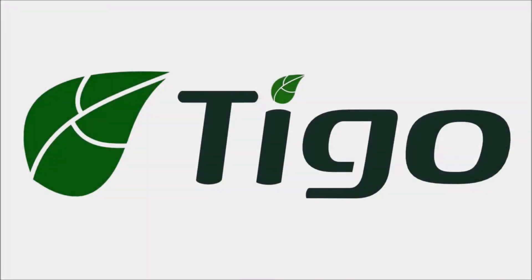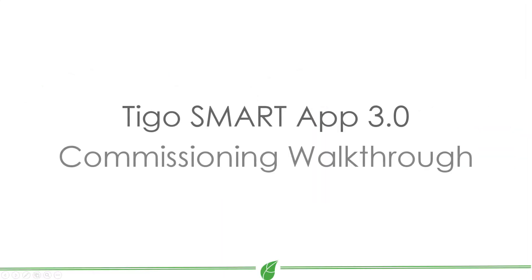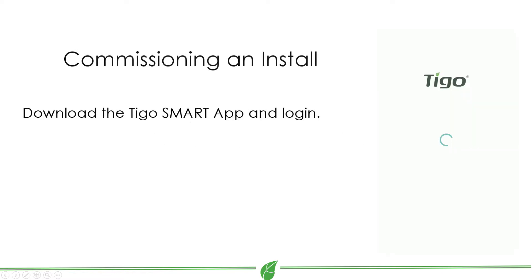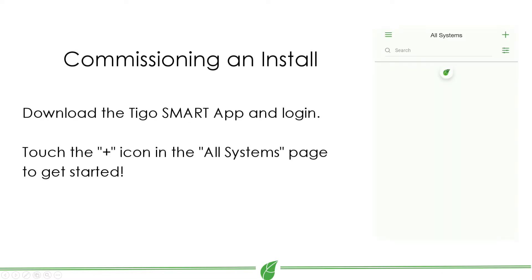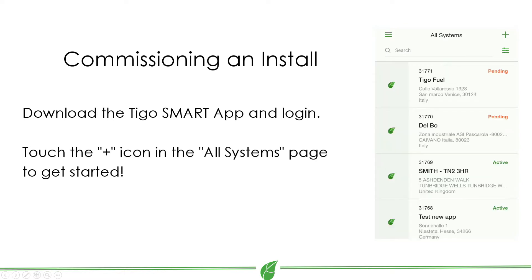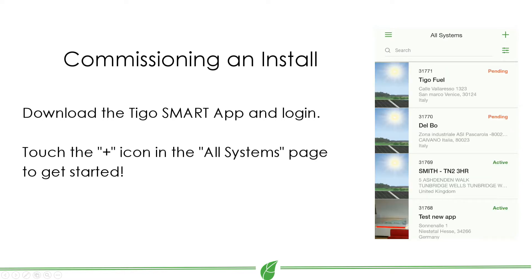The Tygo smart app offers a simple step-by-step process to commission new smart solar systems. Once you are logged into the Tygo smart app, click the plus icon in the all systems page to begin.